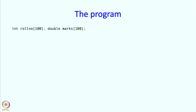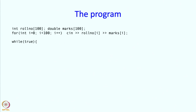Here is the program — it is a reasonably simple program, so let us write it. First we declare the two arrays. Then here is the code that reads in the roll number and the mark. Earlier we were just reading the marks; now we are also reading the roll number, and the roll number is typed in first, which is the natural thing to do.